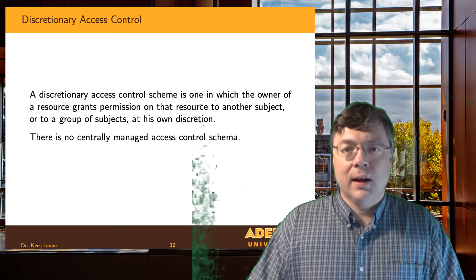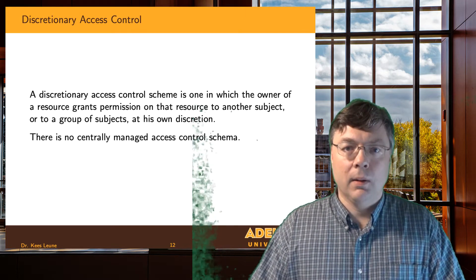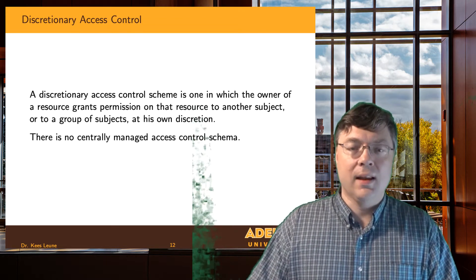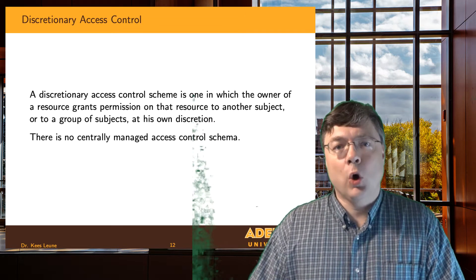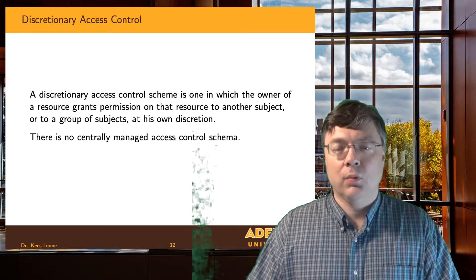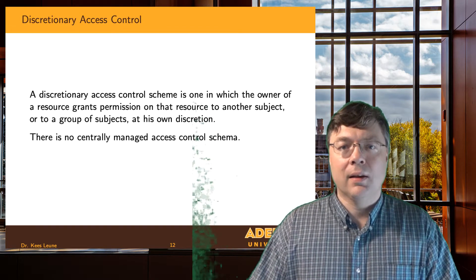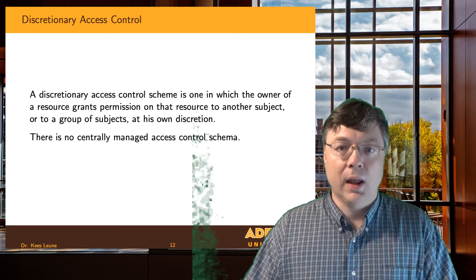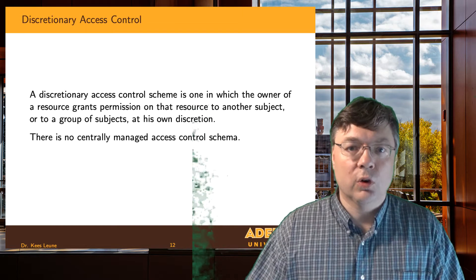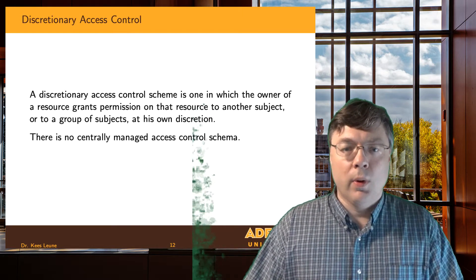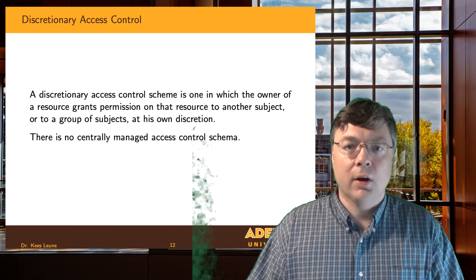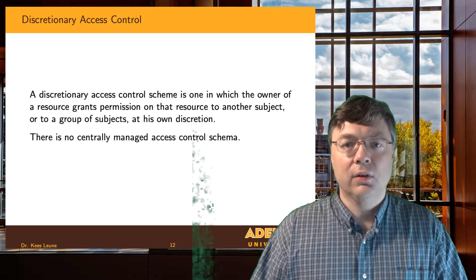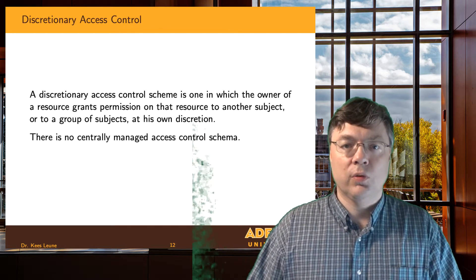Sounds a little abstract, but think about a typical computer system and particularly the file system. Almost all modern operating systems, when you create a file on a disk, assign an owner to that file. Depending on what OS you're using, you can simply right-click and look at the properties of the file, and it will tell you that you are the owner — you created it, and creation equals ownership. Whether you look on Windows, Mac OS, or Linux, each assigns ownership to files.